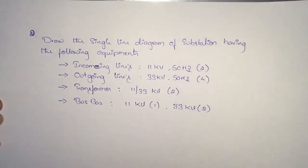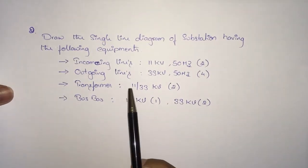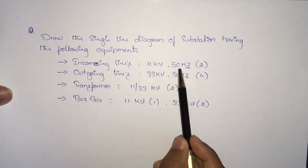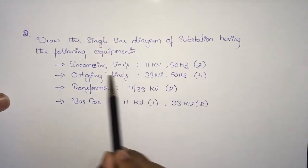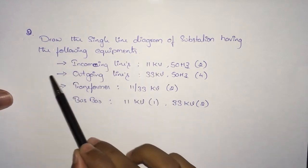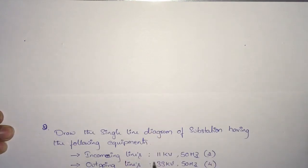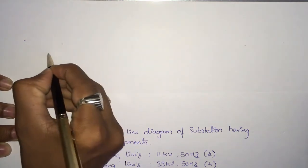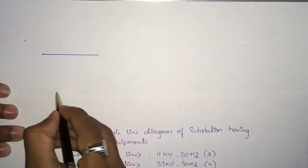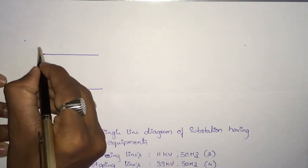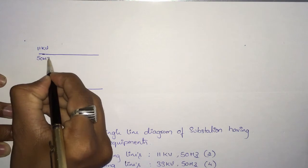Let us start drawing the single line diagram. First we are going to draw the incoming lines. The incoming line is 11 kV 50 Hz of two quantity. Remember, it's a substation — we don't have any generators connected here, just direct incoming lines of 11 kV 50 Hz. Let us draw two incoming lines: incoming line 1 and incoming line 2, 11 kV 50 Hz.